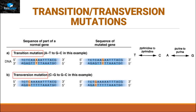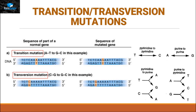The second category is called transversion mutation. Transversion mutation means that if a purine will get replaced by a pyrimidine, or a pyrimidine will get replaced by a purine, that type of substitution is called a transversion mutation. In this picture, cytosine is getting replaced with guanine. Cytosine is a pyrimidine and guanine is a purine, so it falls under the category of transversion mutations.